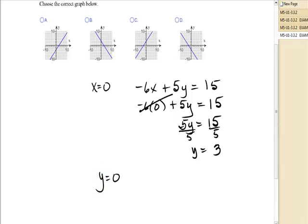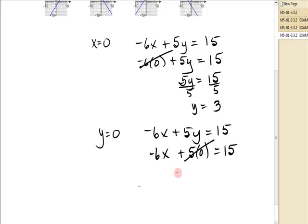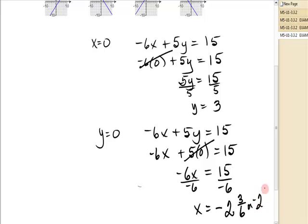If I have y is 0. Negative 6x plus 5y is 15. That gives me negative 6 times, we have negative 6x plus 5 times. It's the y that was 0. And I almost put it in the wrong spot. That term is 0. Negative 6x is 15. Divide by negative 6. x is equal to, well, that doesn't go in evenly. It's going to be a negative. And I just need to know about where this is. And 6 goes into 15 two times with 3 left over. So this is negative 2 and a half.